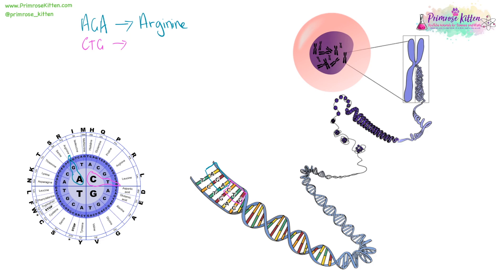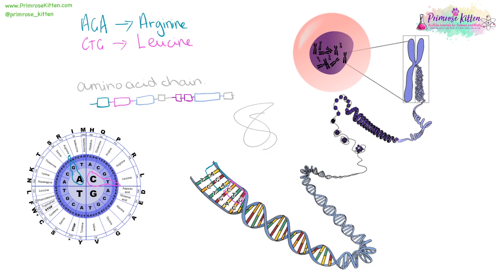The next three along — C, T, G — are going to code into leucine. This will keep going until eventually we have a long amino acid chain, which can then fold up in very complicated ways until we get a protein. Proteins are responsible for basically everything that happens in your body — they are the hormones, the enzymes, the cell walls. Everything is a protein, or dependent upon a protein.